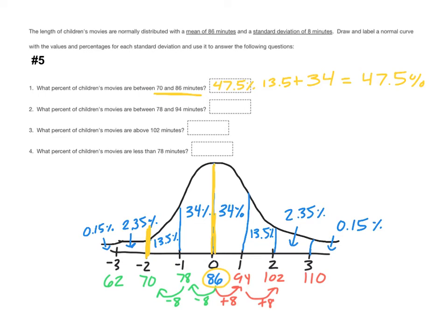The next question says: what percent of children's movies are between 78 and 94 minutes? Well, 78 and 94 is one standard deviation below the mean to one standard deviation above the mean. If you remember the empirical rule, within one standard deviation of the mean is 68%. If you don't remember that, you can just add the two sections: 34% plus 34% equals 68%. So 68% is your final answer on number two.